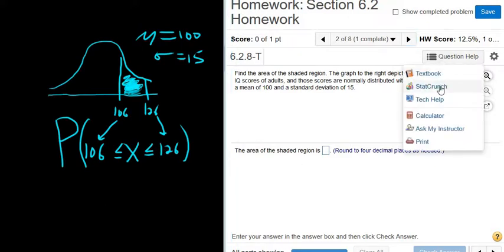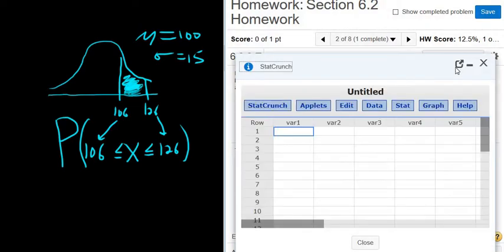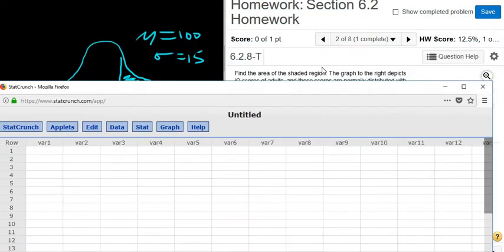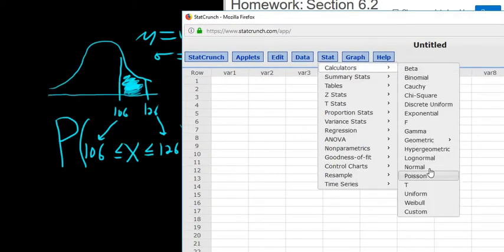Go to question help and then StatCrunch. Then we go to Stat, Calculators, Normal. We left-click.